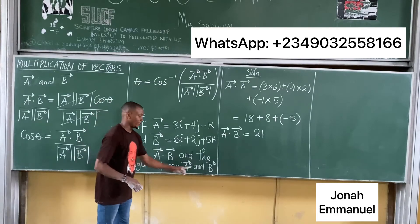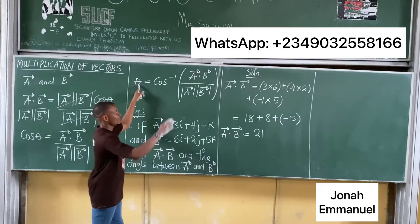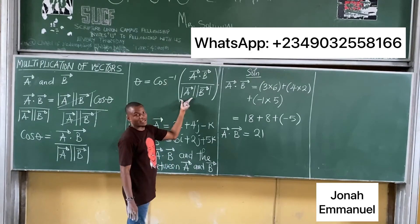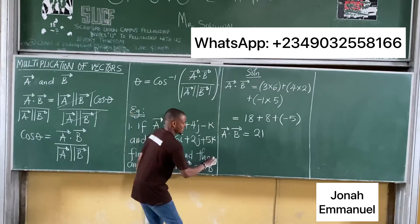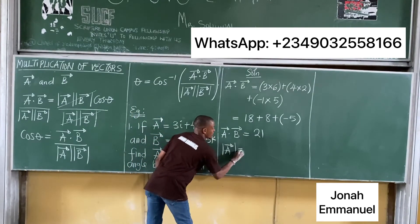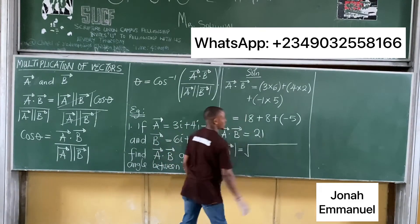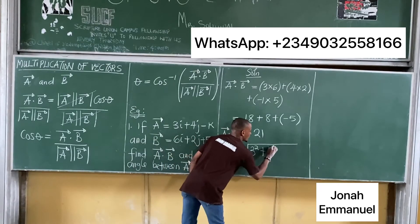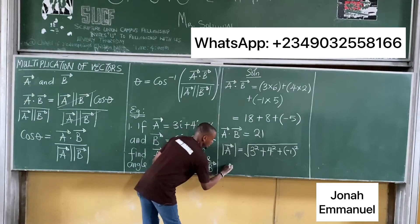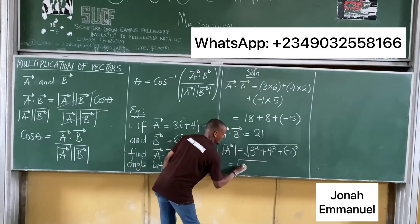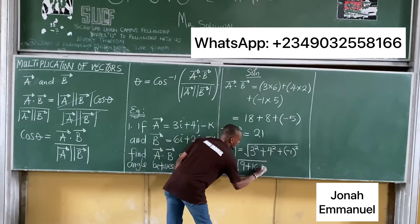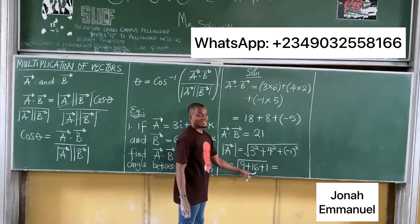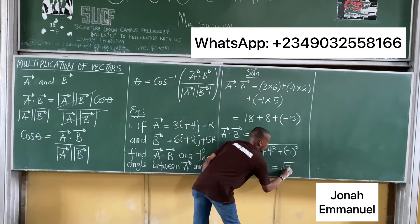To find the angle between a and b, we need a·b (which we have), |a|, and |b|. For |a|: it's the square root of (3² plus 4² plus (−1)²) equals the square root of (9 plus 16 plus 1) equals the square root of 26.